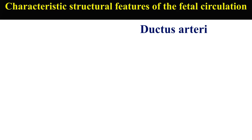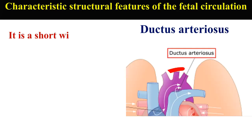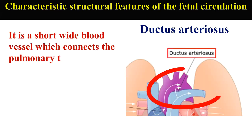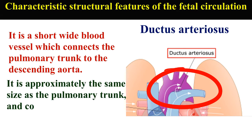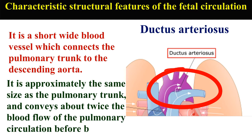Ductus arteriosus. It is a short, wide blood vessel which connects the pulmonary trunk to the descending aorta. It is approximately the same size as the pulmonary trunk and conveys about twice the blood flow of the pulmonary circulation before birth.